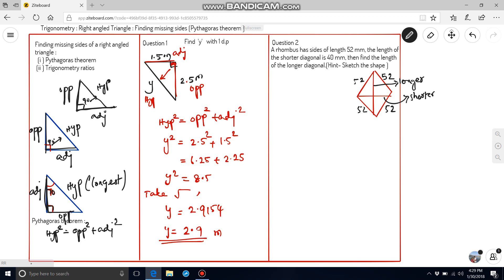So, the shorter diagonal is 40 mm, which we can divide as 20 and 20. Here, we are able to get a right angle triangle, which is having 20 and 52. So, this will be the required length. In this diagram, opposite to 90 degree is 52, which is known as hypotenuse. And, this will be adjacent and this will be opposite.